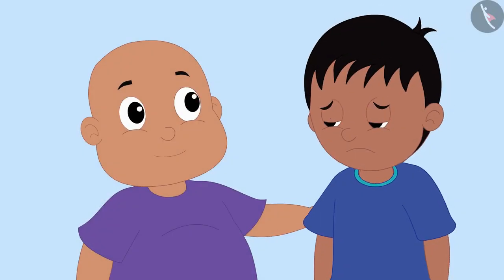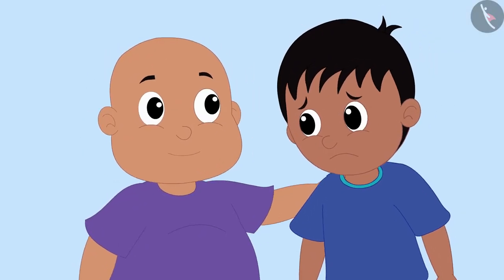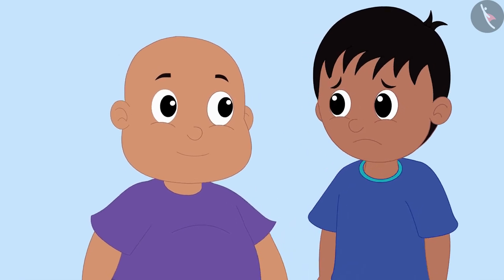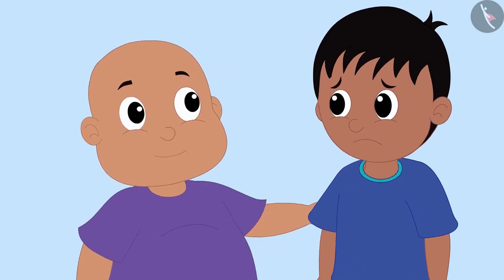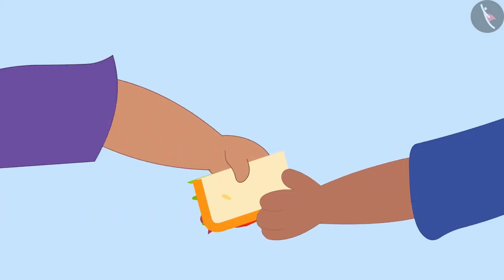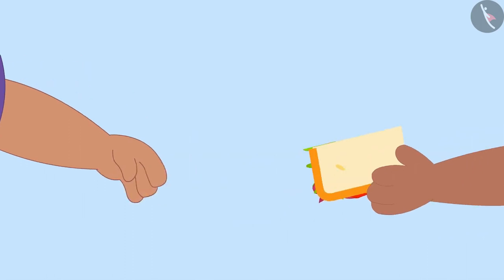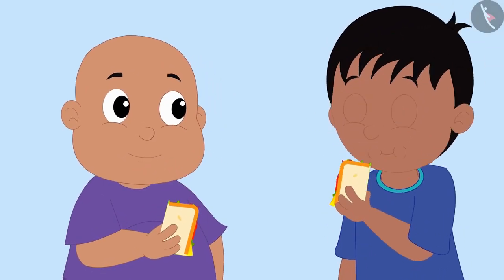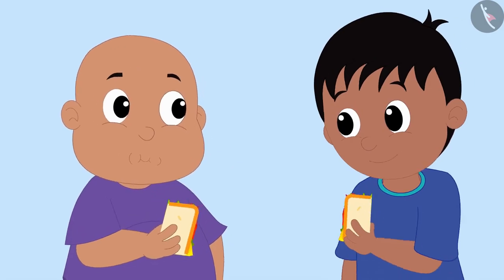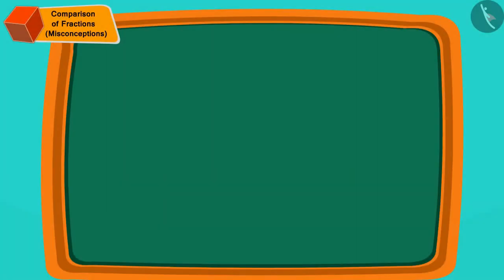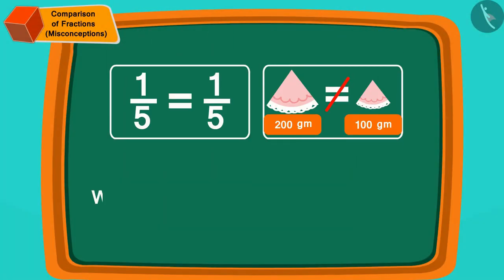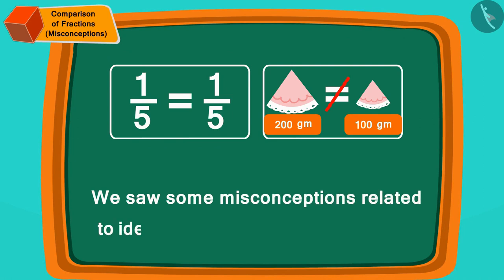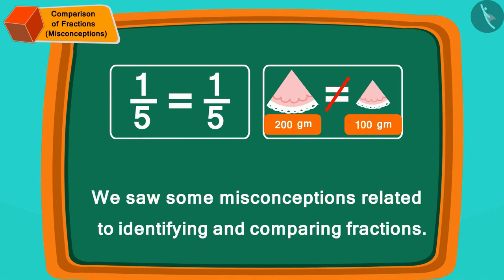Rajoo became depressed after knowing this. Seeing Rajoo sad, Babloo broke a piece of his sandwich and gave it to Rajoo. They both happily ate the sandwich and started enjoying the party. Children, in this video we saw some misconceptions related to identifying and comparing fractions.